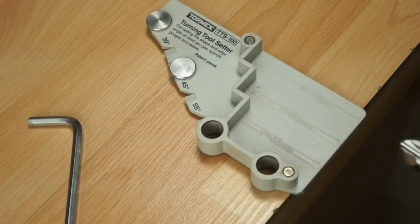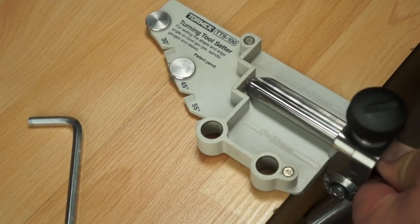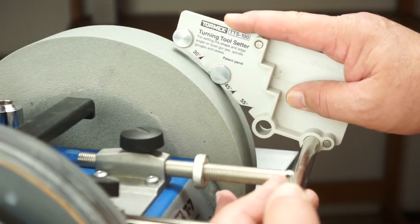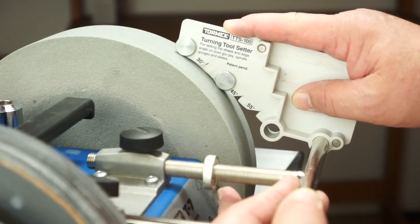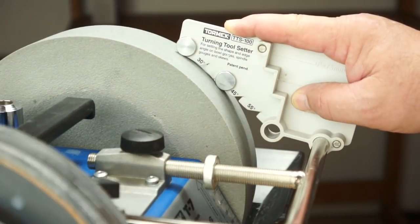Next we'll set the protrusion to 65mm using the TTS-100. Last we'll adjust the universal support until the two buttons both sit on the grindstone. That will give us the same angle even as the grindstone wears.